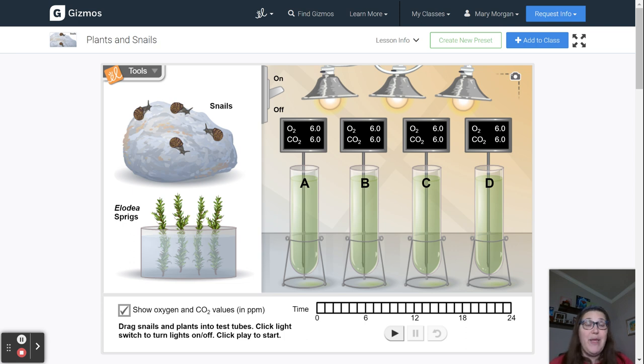As you run the experiment, be thinking about what process or processes does the Elodea sprig represent and what process or processes do the snails represent? All right, so those are all the things that you need to be ready to run this lab. If you have any questions at all, please ask your teacher, and happy labbing!